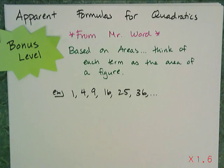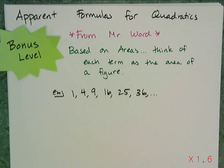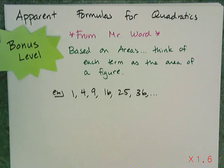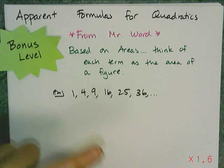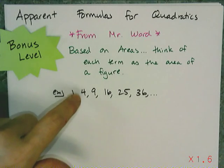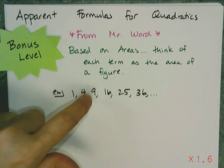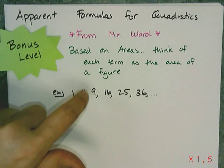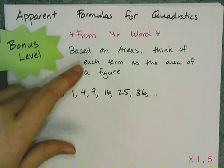In this lesson we're going to talk about how to write apparent formulas for quadratics. Those are the formulas that take the subscript — the a sub n — and turn it into each term of the sequence. It's not the recursive ones; it doesn't require previous values. It merely takes the term number and turns it into the value.